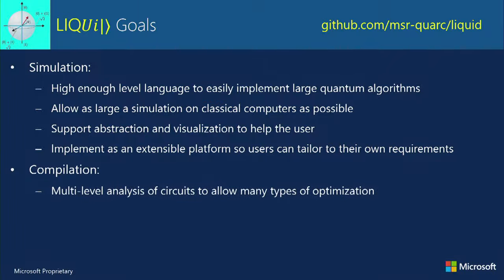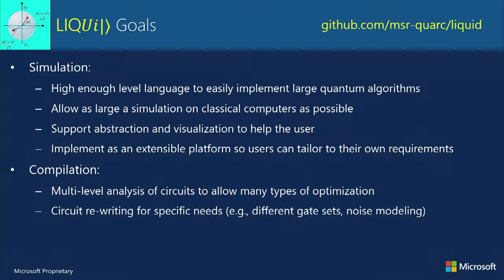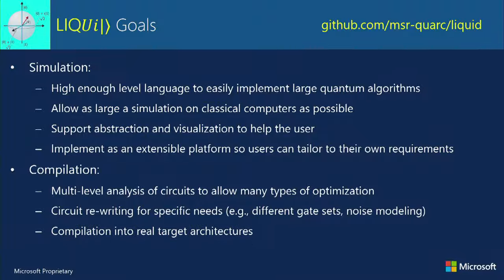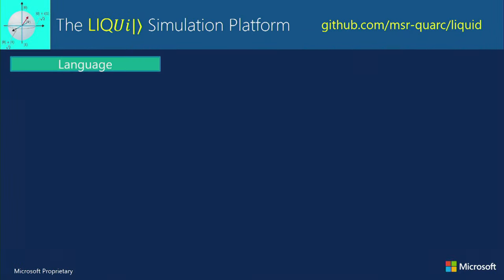It implements an extensible platform — you can define your own quantum gates, your own operations, and put them into the system. It's also a compiler that does multi-level analysis of circuits, allowing many types of optimization for extremely high throughput through quantum algorithms. We do circuit rewriting for specific needs — some qubit technologies don't have certain gates, so you rewrite with equivalent gates and handle noise. And we compile into real target architectures, which is what Sol does — compiling and running real quantum hardware.